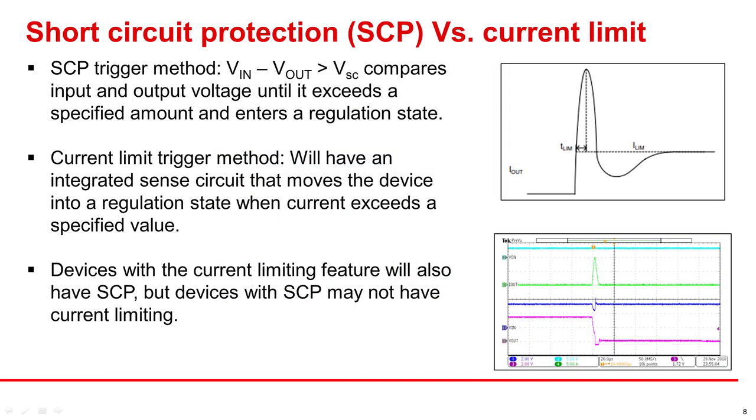Short circuit protection and current limit are two different features that often get confused for one another. The difference between them lies in the trigger method. Short circuit protection triggers when VIN minus VOUT is greater than a specified value, usually V short circuit, and then enters a regulation state. Current limit triggers from an integrated sense circuit that forces the device into a regulation state when the specified current limit is exceeded. Devices with current limit will have short circuit protection, but devices with short circuit protection may not have current limit.